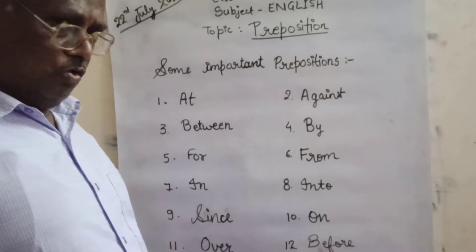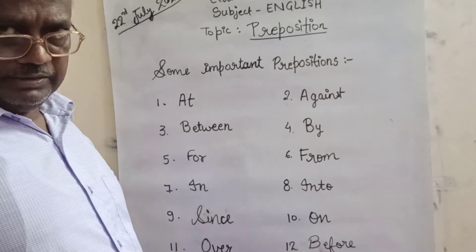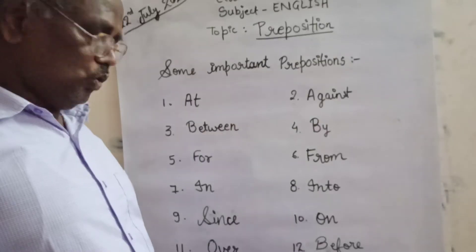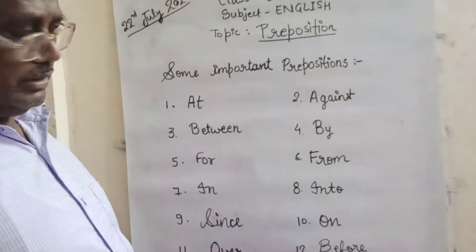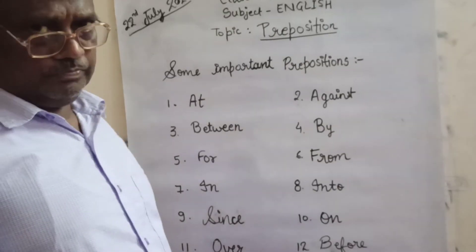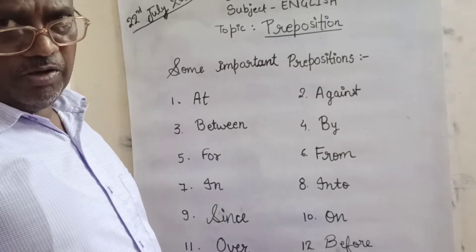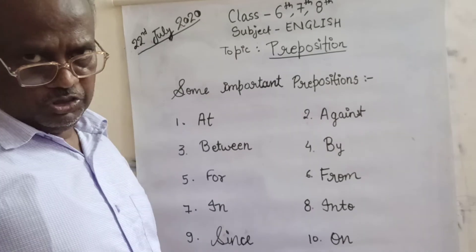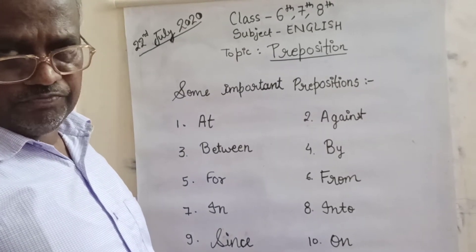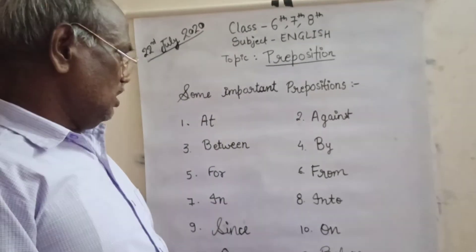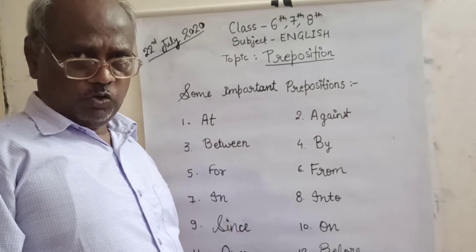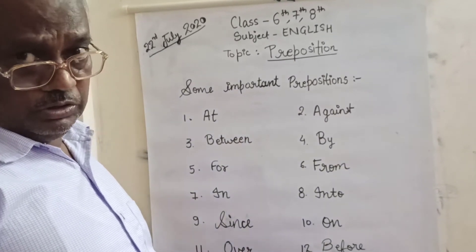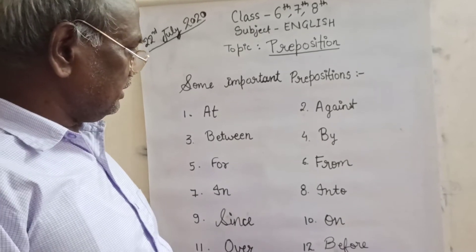'By': Please go there and sit by the bench. 'From': He is coming from the village. She is coming from the village. Who is coming from the village? The mangoes fell down from the trees.